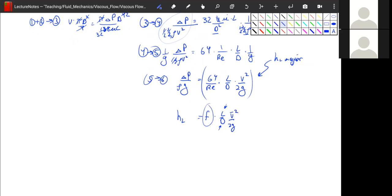So this friction factor is equal to 64 over the Reynolds number. So f equals the friction factor, which is f equals 64 over the Reynolds number for fully developed laminar flow.